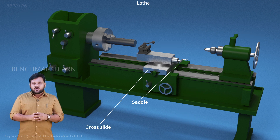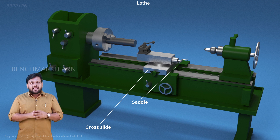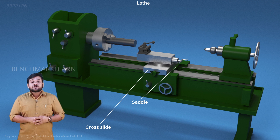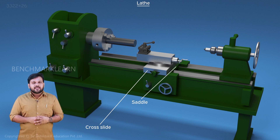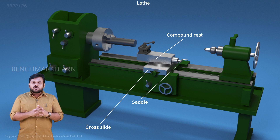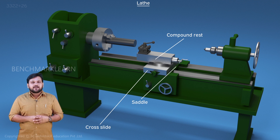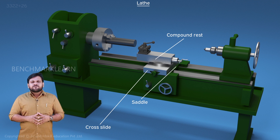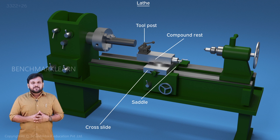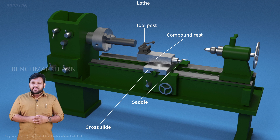The cross slide is mounted on the saddle. It provides motion in the direction perpendicular to the axis of rotation of the workpiece, which gives the depth of cut in turning. The compound rest is mounted on top of the cross slide and can be rotated and set at any desired angle with respect to the workpiece. It can also be moved in a straight line, though the range of movement is small compared to the carriage. The tool post is mounted on the compound rest, and the cutting tool is held firmly on the tool post.